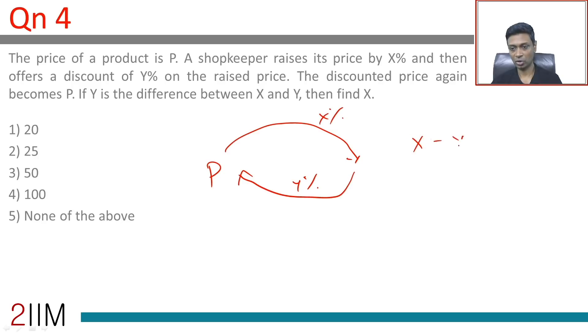X minus Y is X. Remember, X is higher than Y. X is the percentage increase on P, Y is the percentage increase on a larger number. So X should be a larger percentage increase, which is when you will come back to the same starting point.